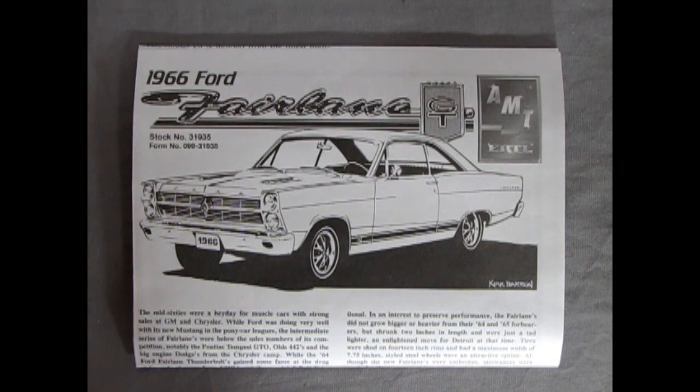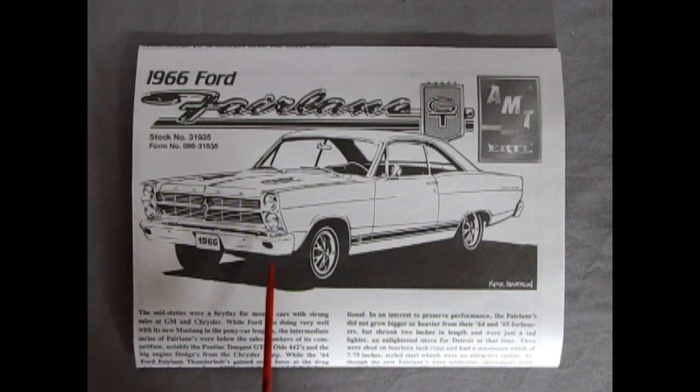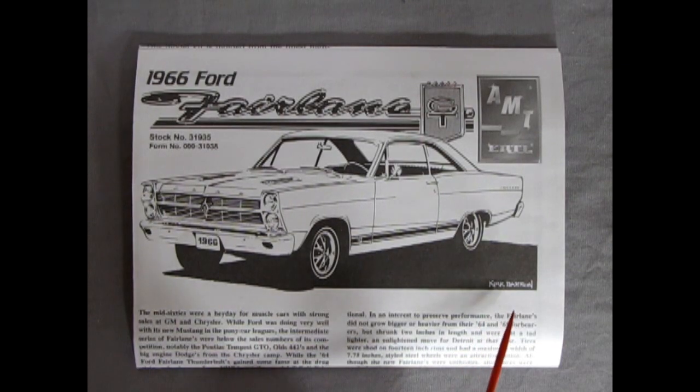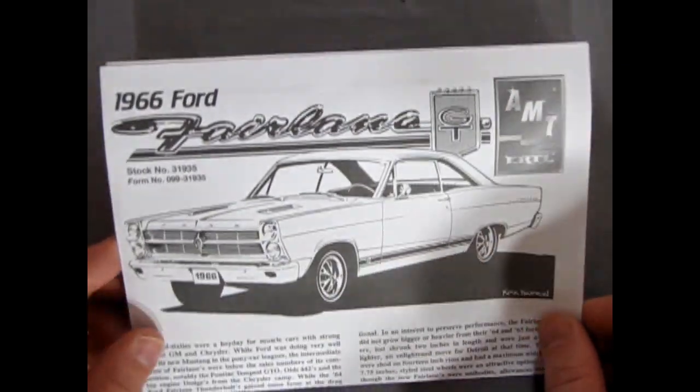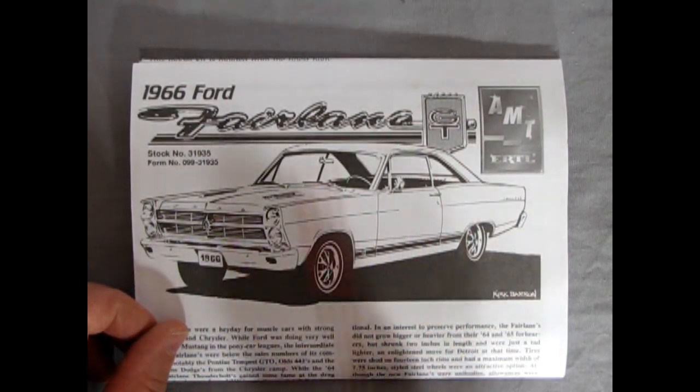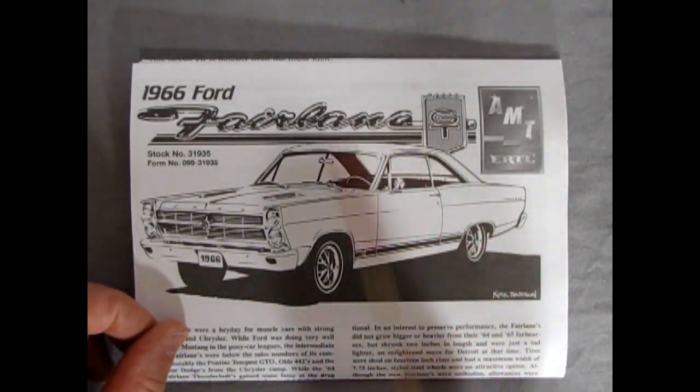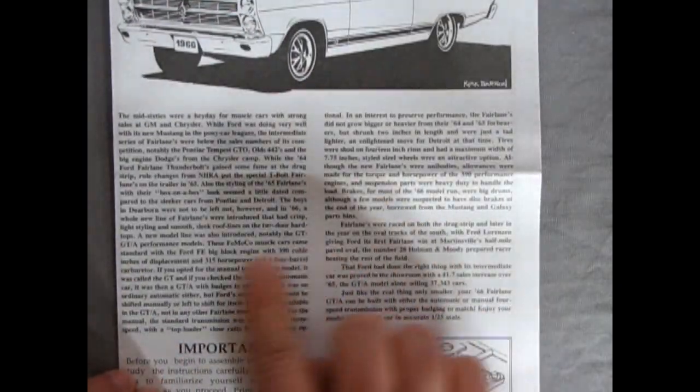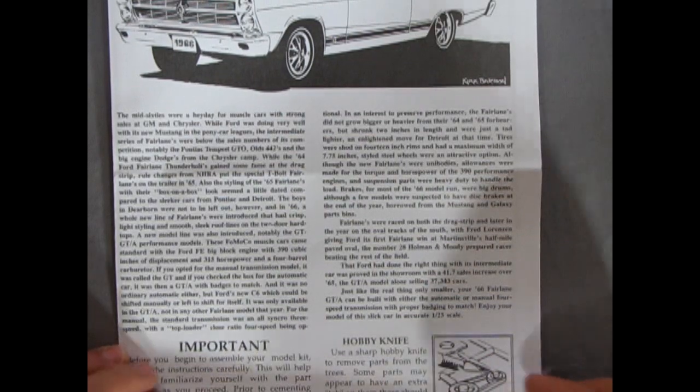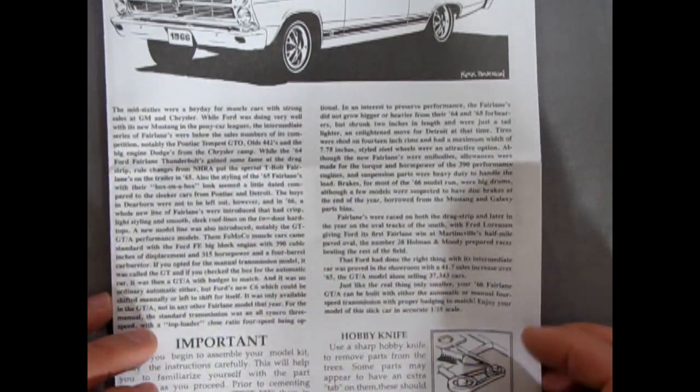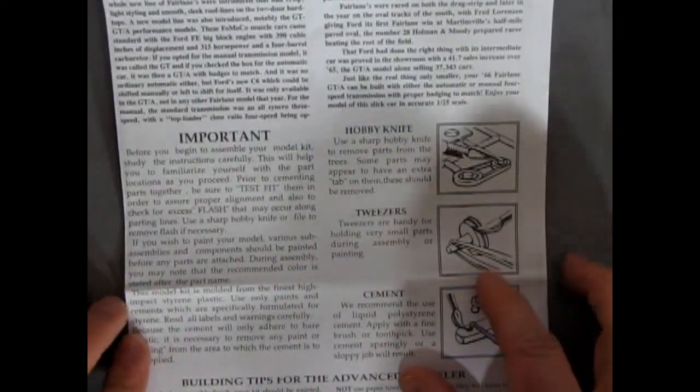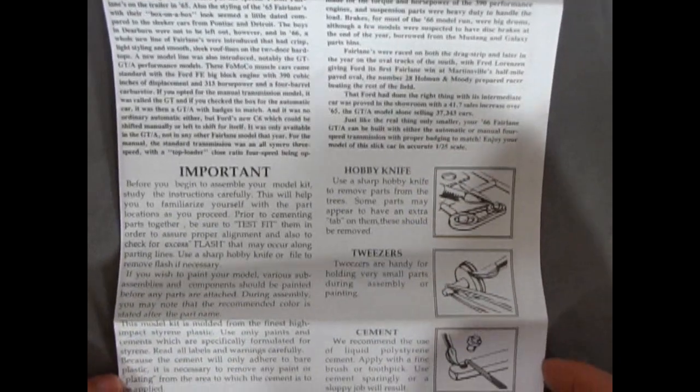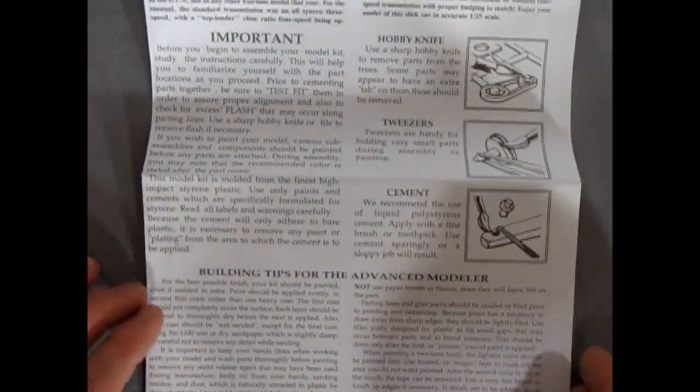And, now, we look at our Ford GT, GTA instruction sheet. And, we've got this nice illustration here, of the car, by Kirk Barron. Very good. Very well drawn. I always like these kind of things, because you could color, or photocopy this, or put it in your computer printer, and make a copy. And, then, color it in the way you want it to be, before you even paint. So, they give you this really huge write-up for the 66 Ford Fairlane. Which, you guys can end up reading on your own, when you get this model. Then, of course, we have our important building tips, and the safety. And, then, building tips for the advanced modeler, down below.